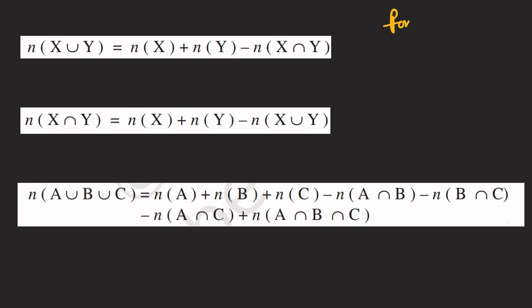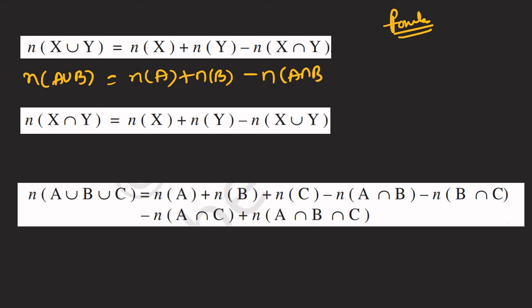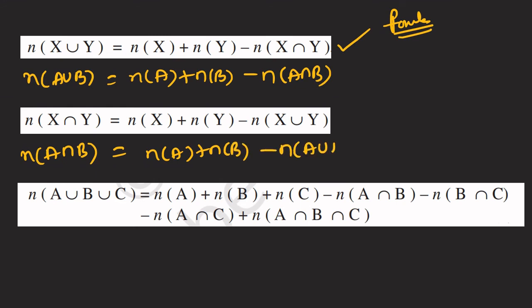This is a very important formula to memorize. The first formula: n(A ∪ B) = n(A) + n(B) - n(A ∩ B). And rearranging: n(A ∩ B) = n(A) + n(B) - n(A ∪ B). These two formulas are essential.